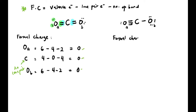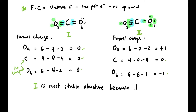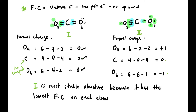For Structure 2 (C triple bond O, single bond O): Oxygen A — 6 − 2 lone pair − 3 bonds = +1. Carbon — 4 − 0 − 4 bonds = 0. Oxygen B — 6 − 6 lone pair − 1 bond = −1. Comparing the two: Structure 1 is more stable because it has the lowest formal charge on each atom (all zero). Structure 2 has +1 and −1 charges, which is less preferable.